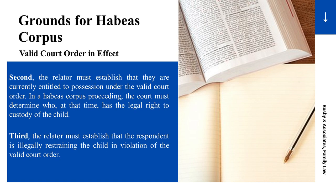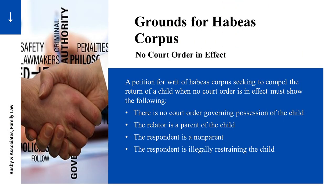Now, if you don't have a court order and you have someone else holding your child — which is typically a relative, a grandparent, an aunt, or an uncle — the family code provides relief in this fact pattern. A petition for writ of habeas corpus seeking to compel the return of a child when no court order is in effect must show the following: there is no court order governing possession of the child; the relator is a parent of the child; the respondent is a non-parent; and the respondent is illegally restraining the child.